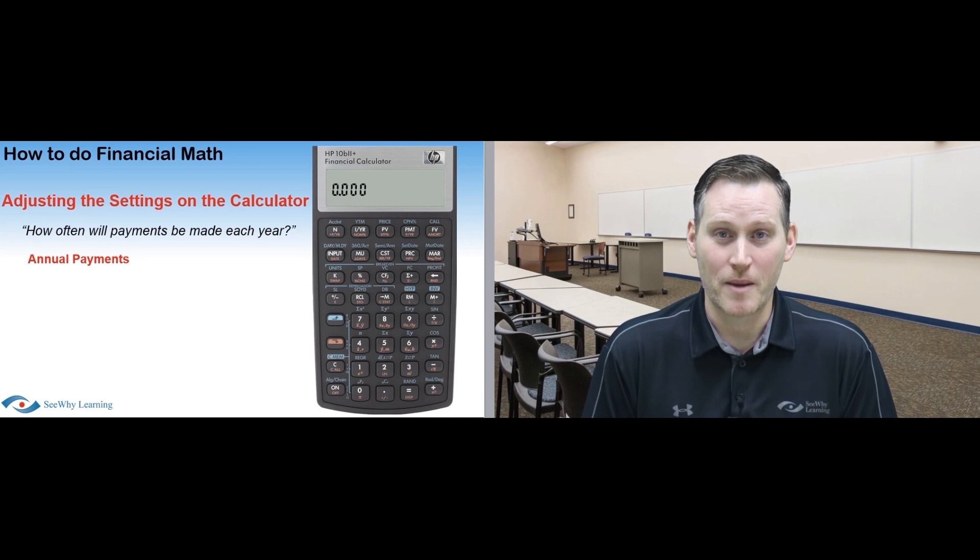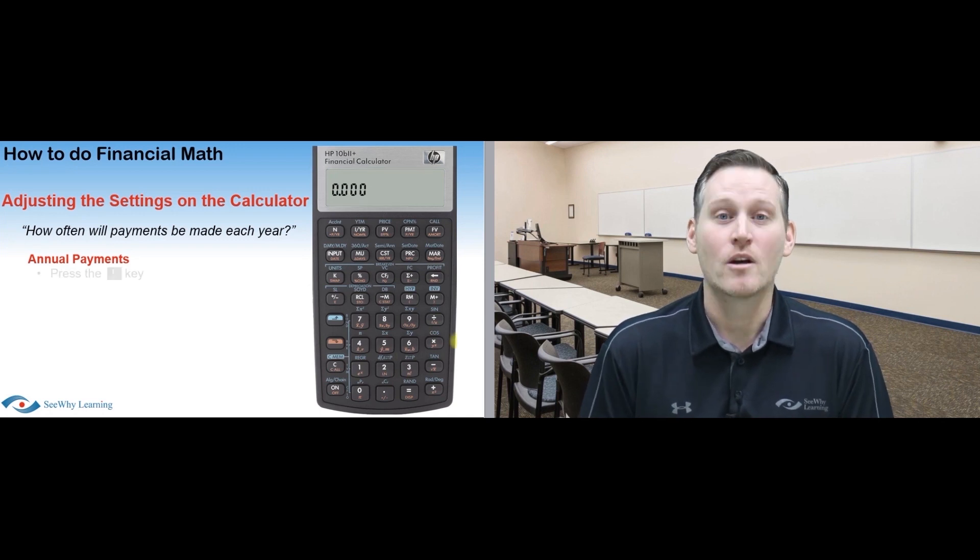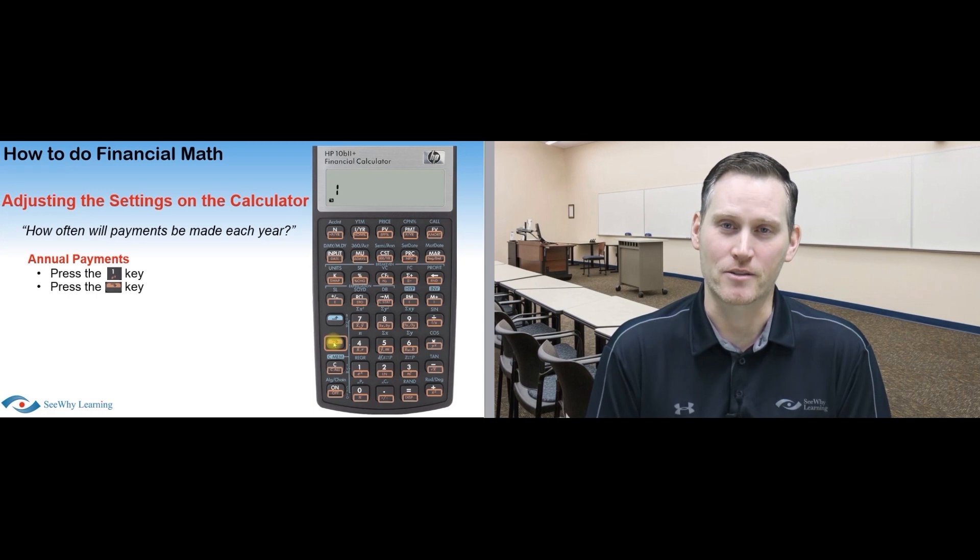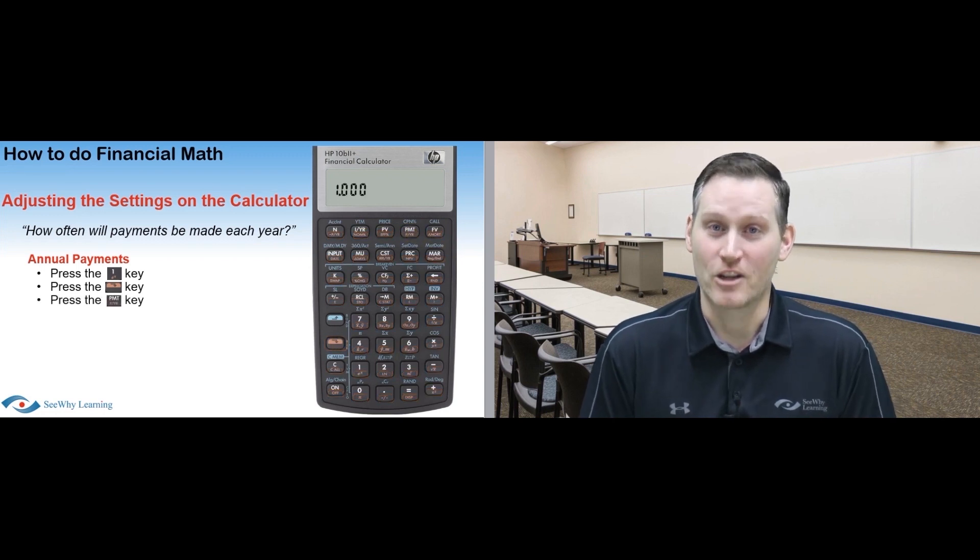So, to set the calculator at one payment per year, we do the following. Press the 1 key, then press the downshift key, and on the HP 10B, this is a colored key that corresponds to the color of the secondary functions on the other buttons. On my version, it's the orange key, and you see the secondary functions are also orange.